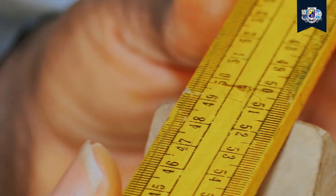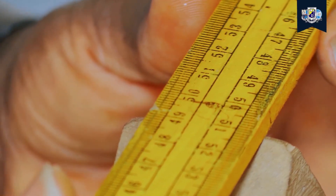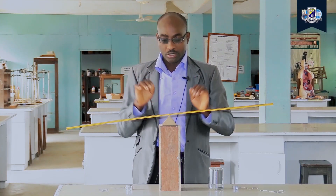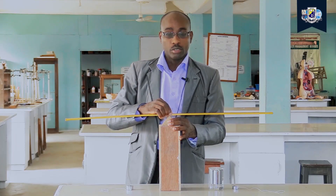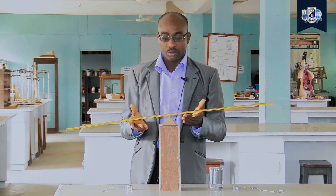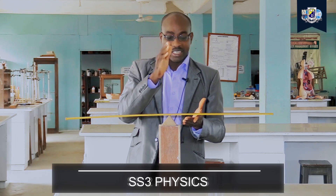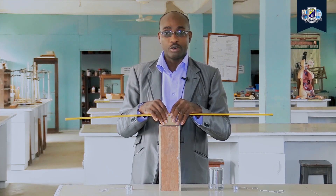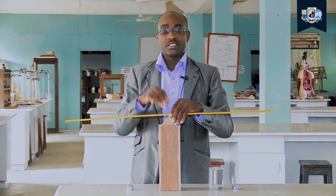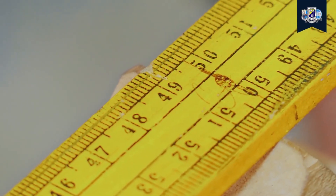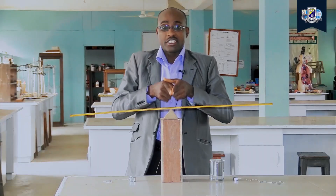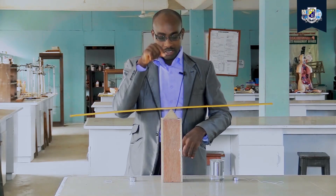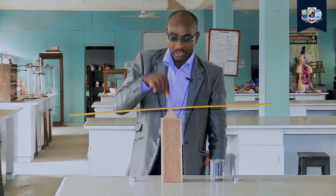The midpoint is the 50 cm mark, since this is a 100 cm meter rule. At the 50 cm mark it will balance horizontally. If it is not a uniform meter rule it will not balance at the 50 cm mark — that is how we know whether a meter rule is uniform or not. As we can see, it is balanced at the 50 cm mark, and this balance point is what we refer to as the center of gravity of the meter rule.